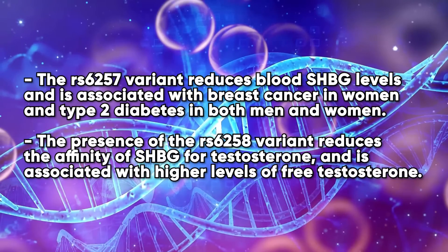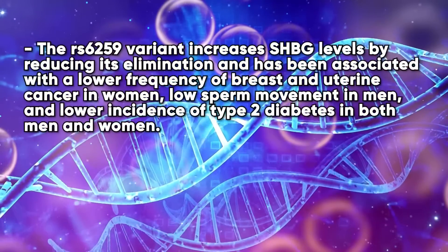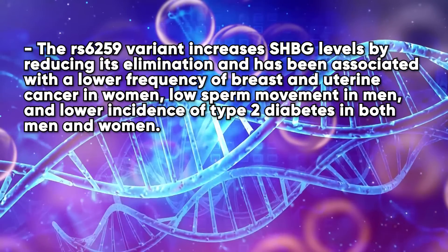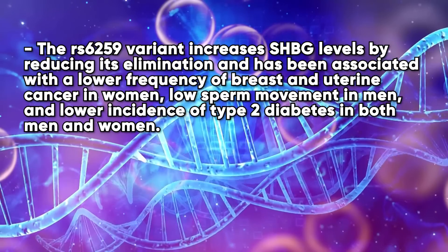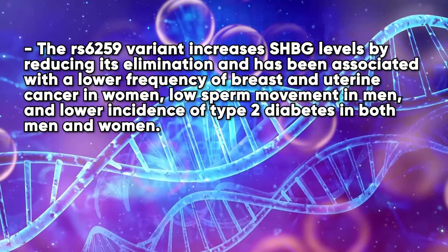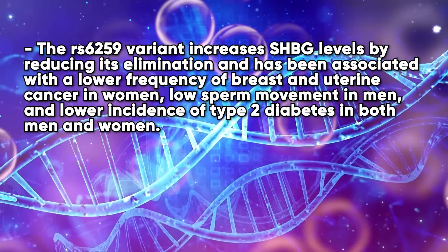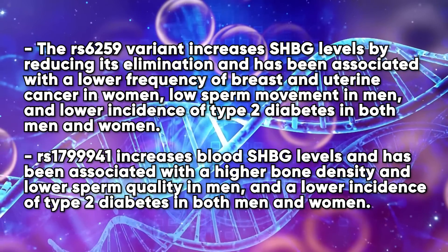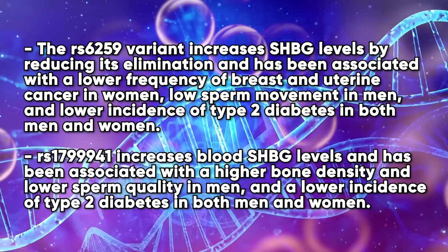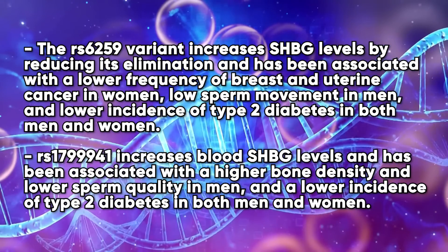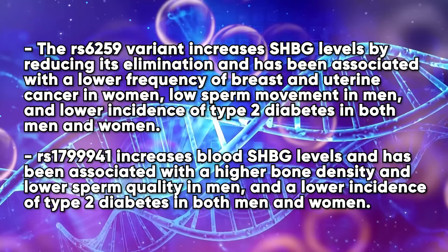The rs6529 variant increases SHBG levels by reducing its elimination and has been associated with a lower frequency of breast and uterine cancer in women, low sperm motility in men, and lower incidence of type 2 diabetes in both men and women. The rs1799941 variant increases blood SHBG levels and has been associated with higher bone density, lower sperm quality in men, and a lower incidence of type 2 diabetes in both men and women. This data is credited to SelfDecode by Joe Cohen.